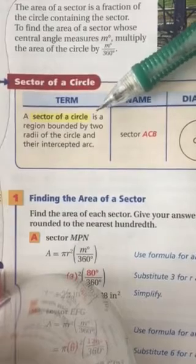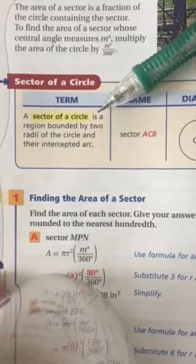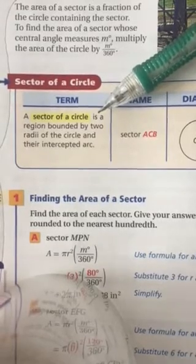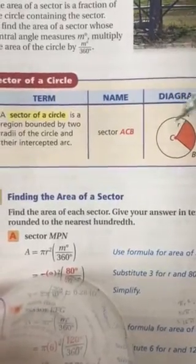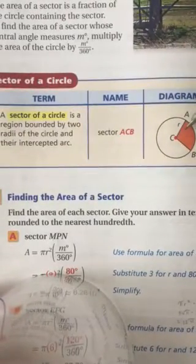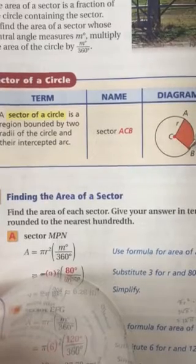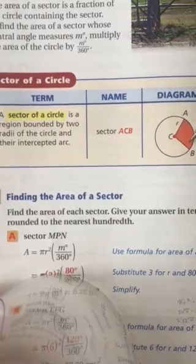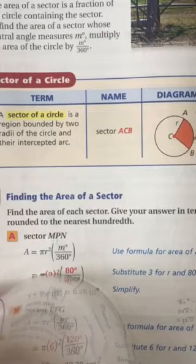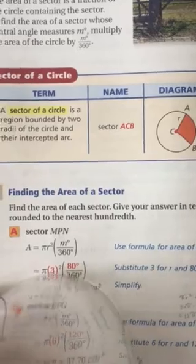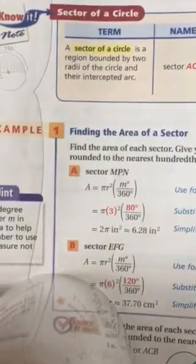A sector of a circle is a region bounded by two radii of the circle and their intercepted arc. Let's look at what that means. The sector of a circle is a region bounded by two radii. So that means it has a radii running along each side and their intercepted arc. So it's bound by two radii and its intercepted arc. Okay, moving on to example one.